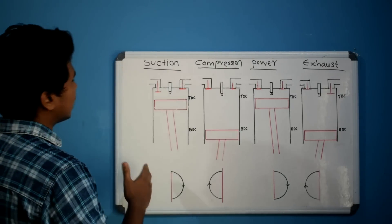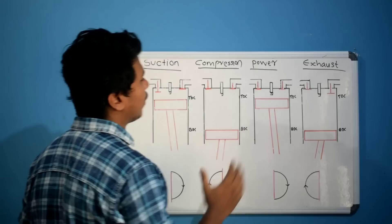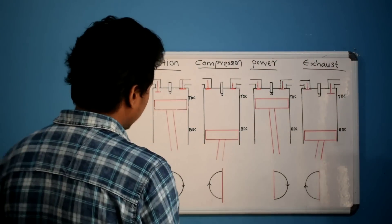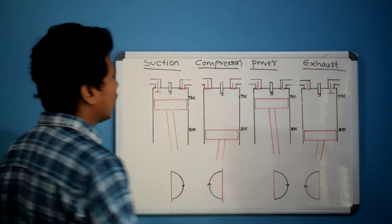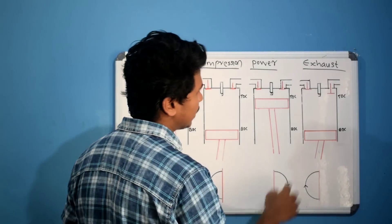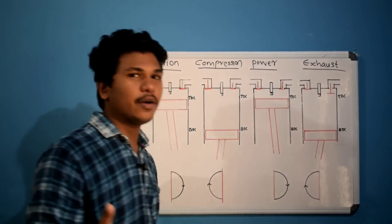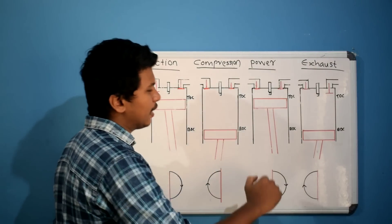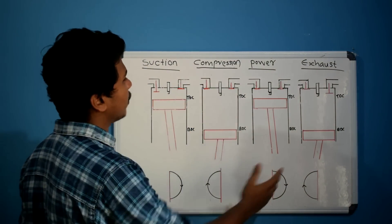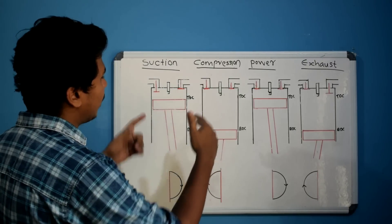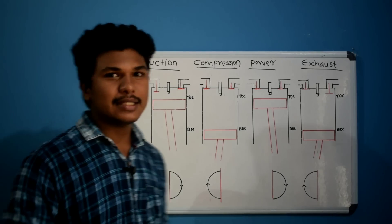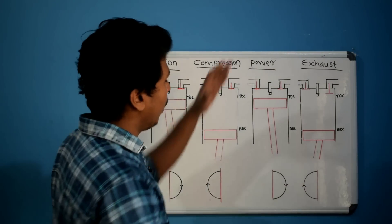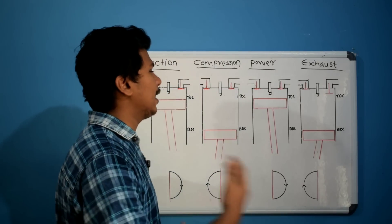The power stroke is the key stroke that provides useful work. In the crankshaft, one rotation covers the suction stroke, a second rotation covers the compression stroke, the third gives the power stroke, and the fourth gives the exhaust stroke. In those two full rotations, one complete working cycle is done. We only get power during the power stroke, which is why a starter motor or kickstarter is needed to initiate the engine. Once the power stroke is done, the engine will automatically repeat the cycle.